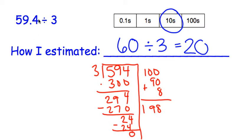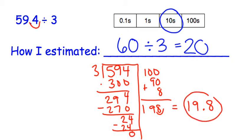We could also use the method where we move over however many places our decimal needs to go into the answer. Our decimal is one spot in, so if we move one spot in here, our final answer would be 19 and 8 tenths. That answer is in the tens place and it's very close to 20, so we know that we are correct.